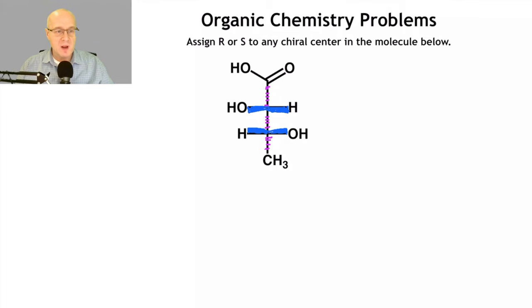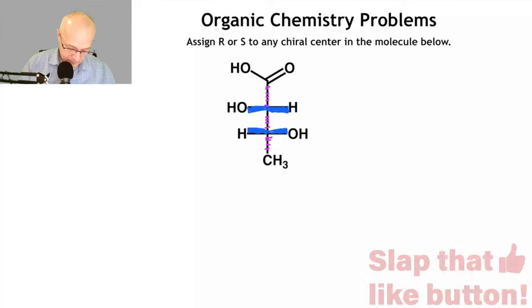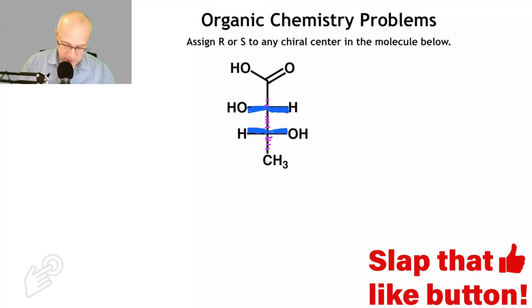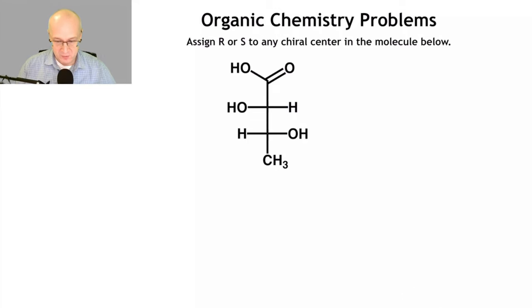So now an important concept here is that you have to understand that the hydrogen is the low priority group in every chiral center, no matter what. Hydrogen is always low priority. So that means you have to be mindful of the Cahn-Ingold-Prelog rules.